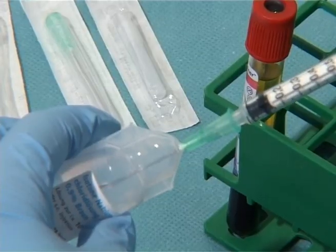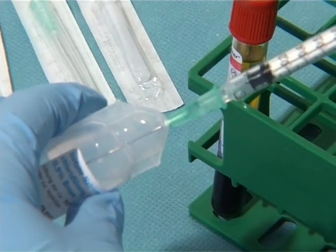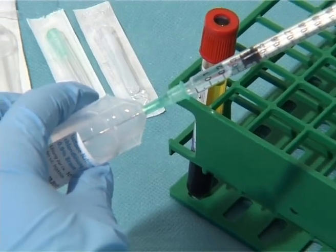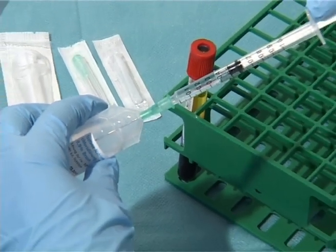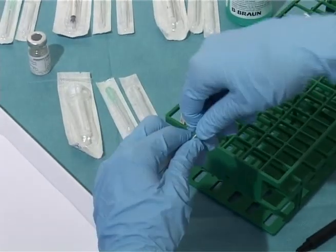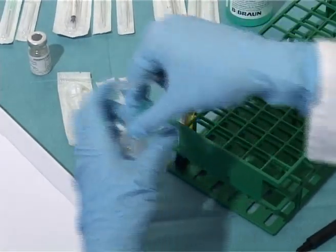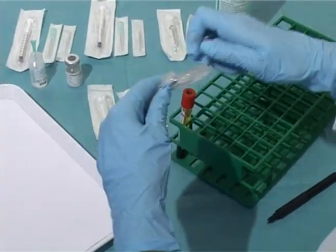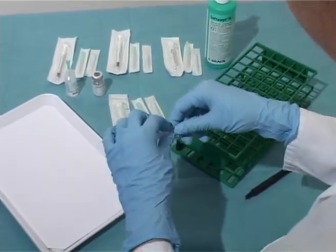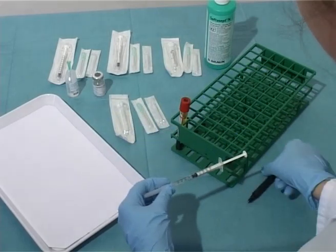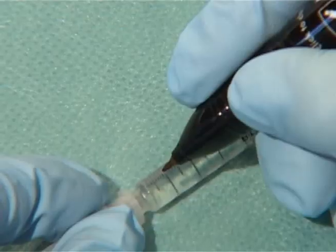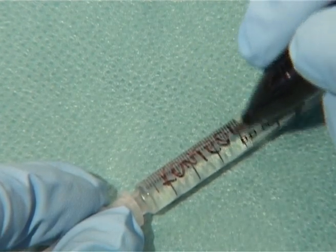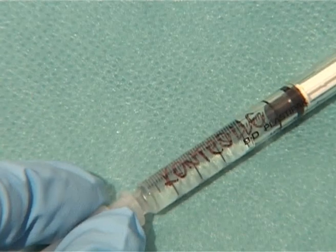First, for the negative control injection, a 0.9% saline solution is drawn into a 1 mL syringe such as an insulin or tuberculin syringe, and a 0.4 mm needle suitable for intercutaneous injection is attached. The protective covering remains on the needle. The syringe is marked with a permanent marker and put aside.